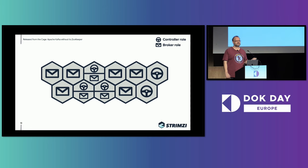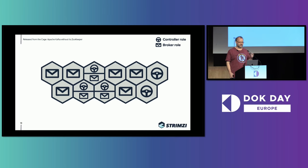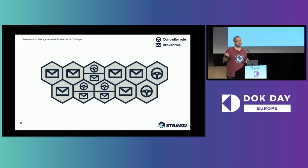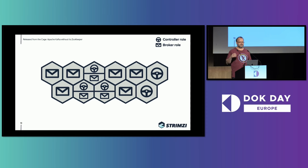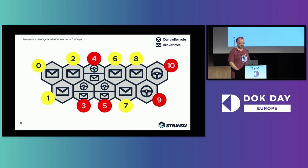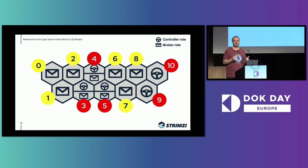But then we move to the ZooKeeper-less Kafka cluster. You have only Kafka nodes, but each has a slightly different role. Maybe you started with three brokers and some mixed nodes with both controller and broker roles, then scaled up and added more brokers, then decided to run dedicated controller nodes instead of mixed nodes. So you can easily have a Kafka cluster in a state with many different node types. All these nodes share the same sequence for node IDs — they start somewhere and end somewhere, but you can't have two Kafka nodes with the same ID. It has to be unique.